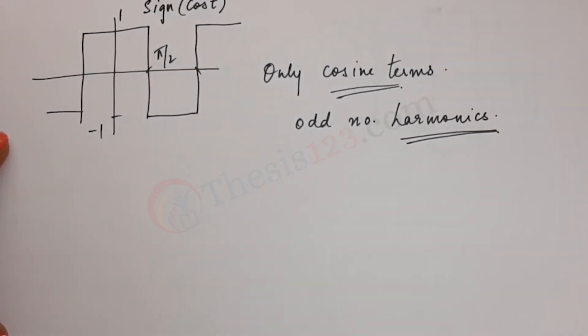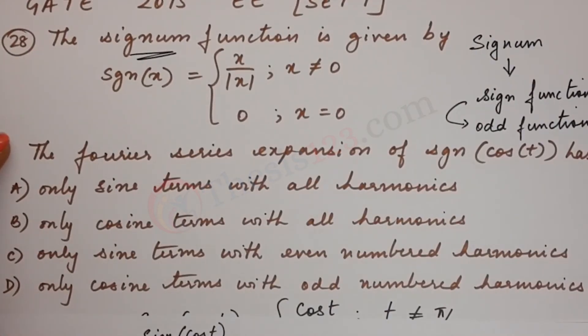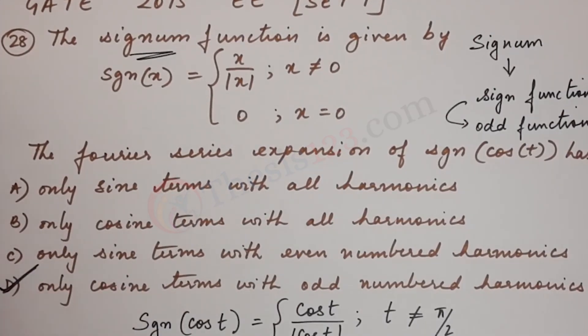So based on that, the right option is it consists of only cosine terms with odd numbered harmonics. So option D is the right answer. Well, I hope this has helped.